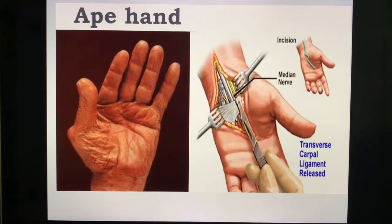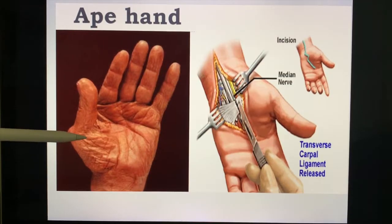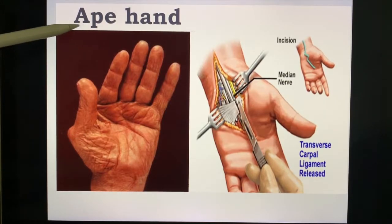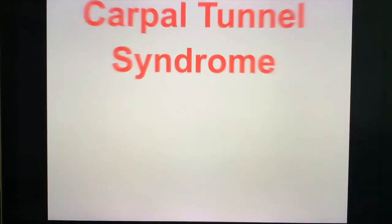As you can see, this is the classic atrophy of the thenar eminence, which we call the ape hand (APAN). Memorize that for your exam.